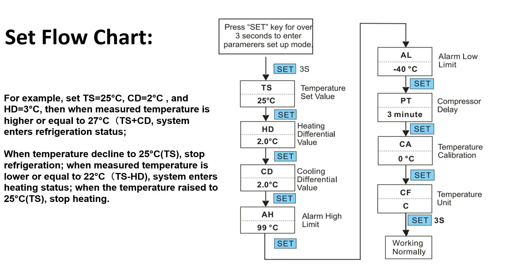When the temperature goes lower than or equal to 22°C — which is the temperature set value minus the heating differential HD — the system enters heating mode. When the temperature rises back to 25°C, the controller stops heating. This is how the controller controls the temperature of your application. PT is the preset compressor delay — if the compressor turns on and off frequently it may get damaged, so a compressor delay can be added to protect it.